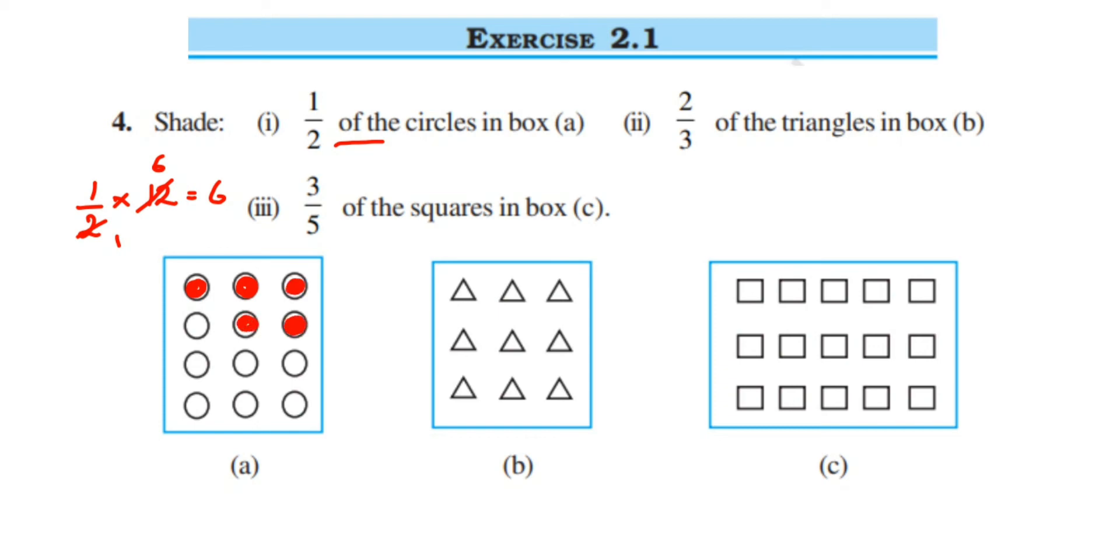Then the next one: two-thirds of triangles in box B. So two-thirds of triangles in a box. How many triangles are there? We have total 9 triangles here.